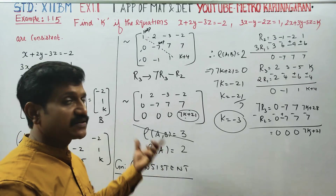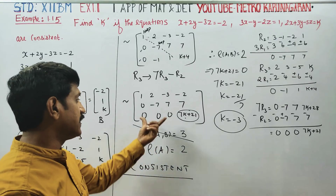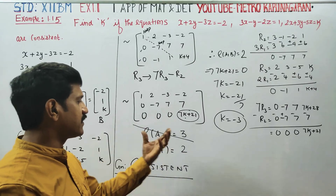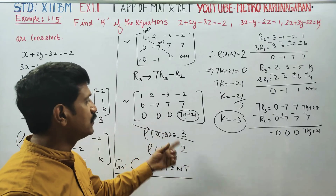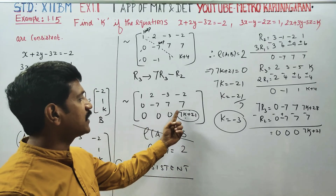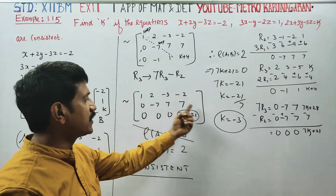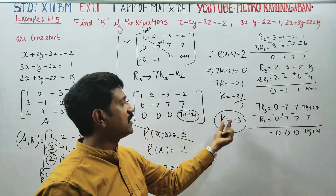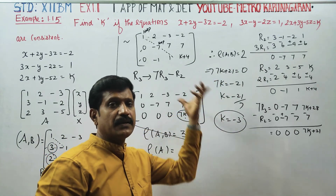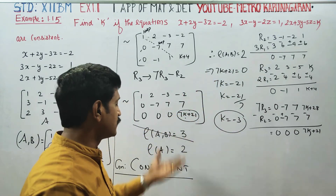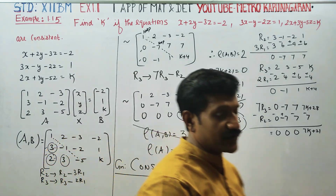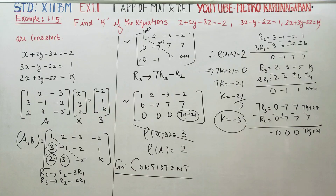The answer is that the system is consistent. The rank of the augmented matrix is 2. This means 7k plus 21 equals 0, so k equals minus 3. The given solution is consistent because of this value of k. Thank you.